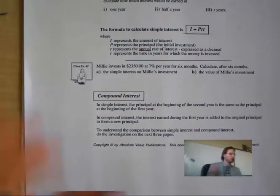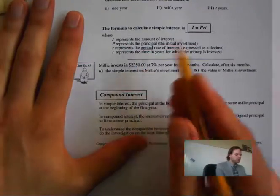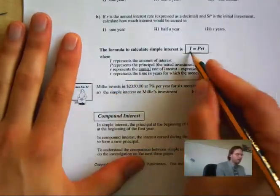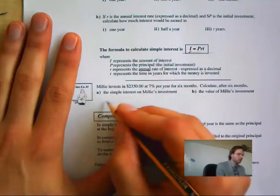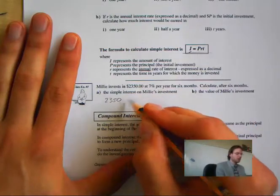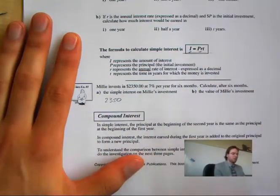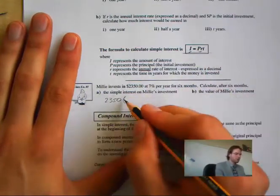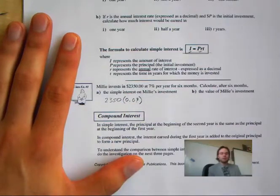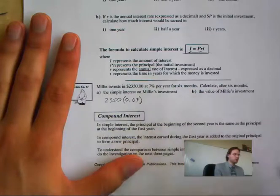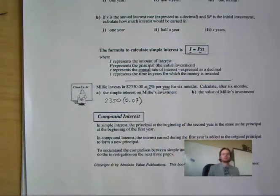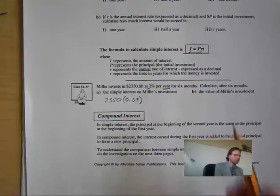Later we are going to be looking at compounding. The interest is equal to the principal amount, which is $2,350, multiplied by the rate of interest — in this case 0.07, which is 7% — and then we multiply that by the time. Now it is 7% per year and we are only going for 6 months.